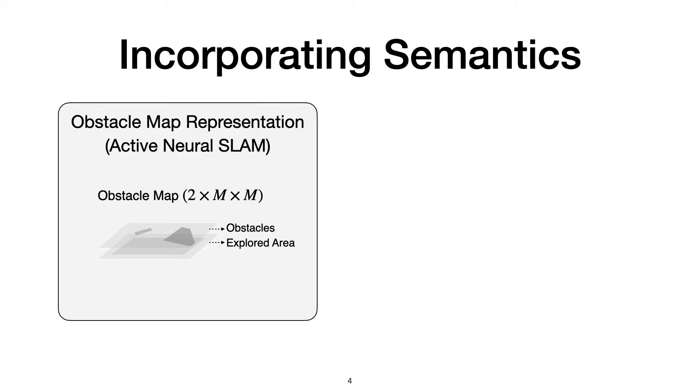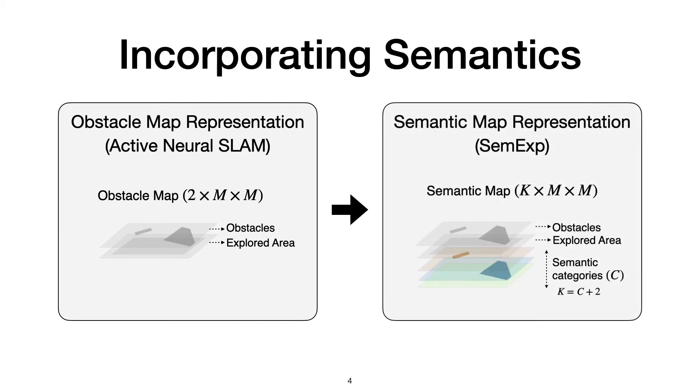In order to incorporate semantics, we replace the obstacle map in the Active Neural SLAM model with a semantic map by simply adding separate channels for each semantic category.